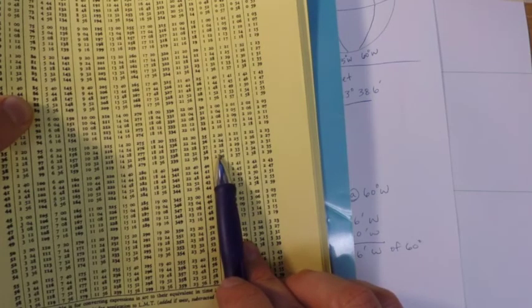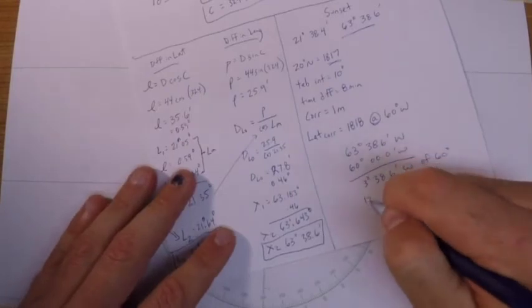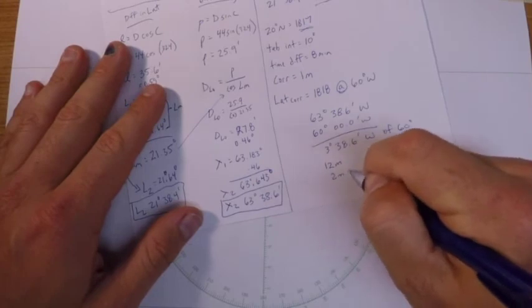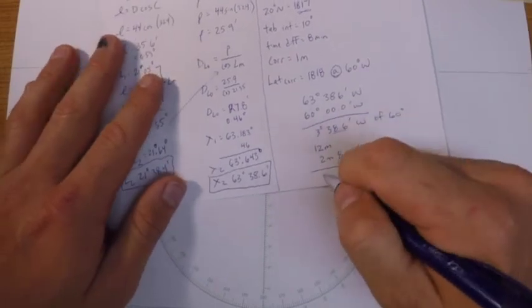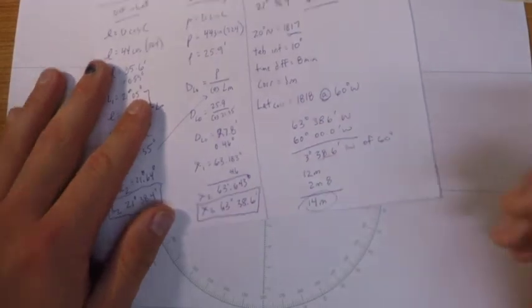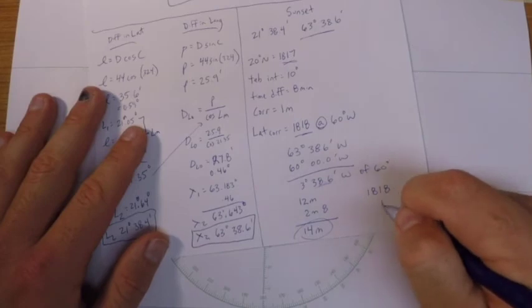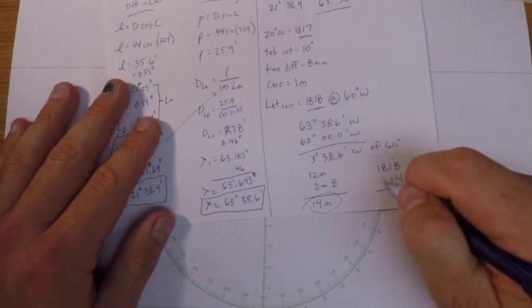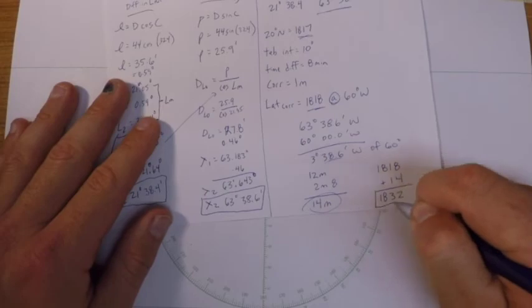3 degrees is 12 minutes, and then 38 minutes of arc is 2 minutes and some change in terms of time. So looks like I need to do 12 minutes of adjustment there for the degrees and 2 minutes 8 seconds for the little leftover there. So I'm going to change my time by 14 minutes. That's going to be good enough for our problem. And so 1818, I'm going to change it by 14 minutes, and since I moved west, things are going to be later, so I'm going to add that. And I end up with a time of 1832 for my final answer.